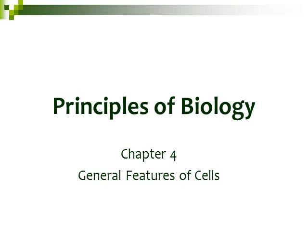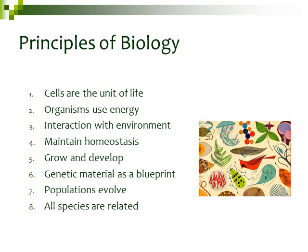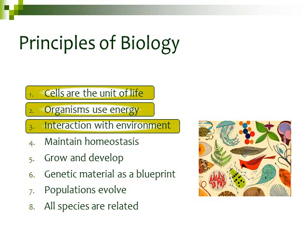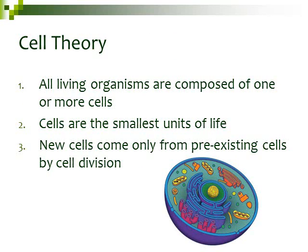This is part 1 of 5, looking at chapter 4, General Features of Cells. In our 12 Principles of Biology, I have the first 8 listed here — these are the 8 characteristics of living things. In this chapter, we're going to be focusing on the first 3 characteristics: cells are the most basic unit of life, organisms need to get and use energy in order to live, and living things can interact with their environment. This chapter really focuses on that first characteristic, that living things are made up of cells.